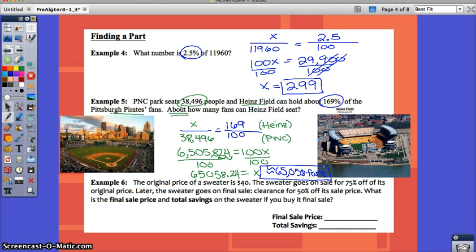Now, if you tried example 6, the original sweater, the cost of the sweater is $40. The sweater goes on sale for 75% off of its original price. Later, the sweater goes on final sale, clearance, for 50% off of its sale price. You may have done this a different way, but I want to show you one method. If you're taking a percent off, I often think about what percent am I keeping? So, 75% off is really keeping 25%, right? So, the sweater is now going to cost only 25% of what it did cost. So, for me, I would set up the proportion being 25% out of 100. It's okay if you did this a different way. Let's see if you got the same answer. So, my $40 is my whole and my partial cost would be what I would be paying after the 25%.